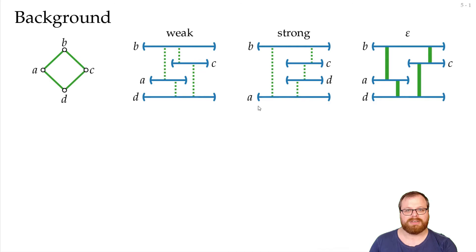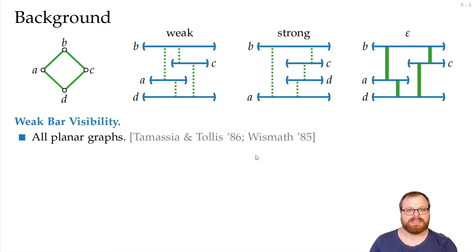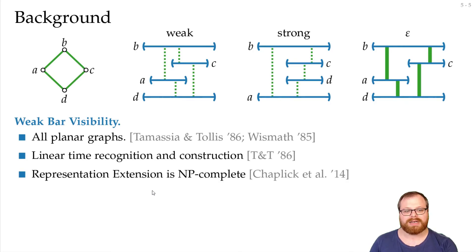Many things are already known about these types of representations. For weak bar visibility Tamasier and Tolis and independently Wismath could prove that all planar graphs have a weak bar visibility representation. And there is also a linear time recognition and construction algorithm. On the other hand the representation extension problem is NP-complete.